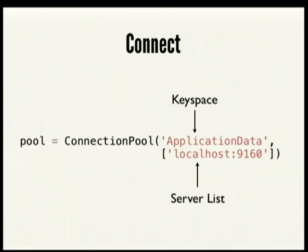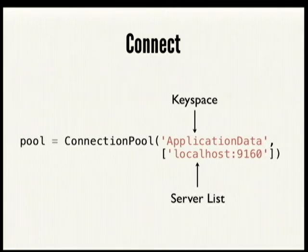Connecting with PyCassa is very simple. You create a connection pool object, tell it what key space you're connecting to, and give it a list of servers in your cluster. PyCassa will handle retries across different servers in the connection pool on errors. If you have multiple threads using the same connection pool object, it'll multiplex those threads across the different servers to spread out the load. Cassandra scales up pretty linearly when you add more nodes if you add more processes to go across those nodes.